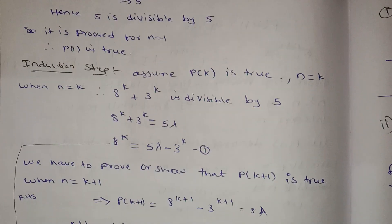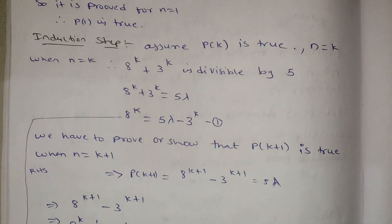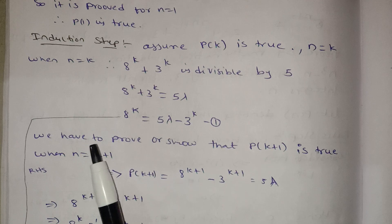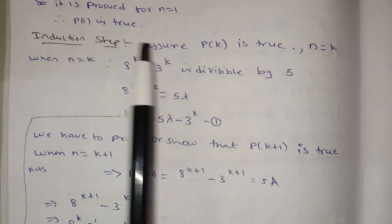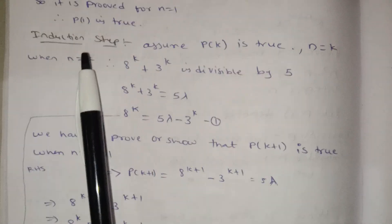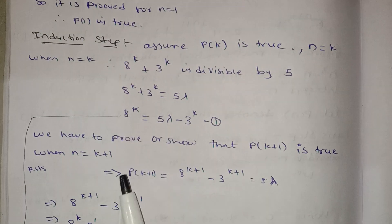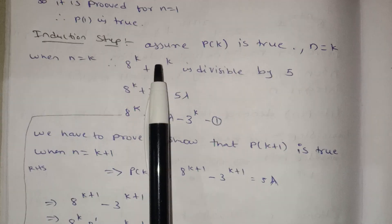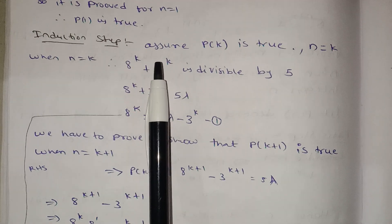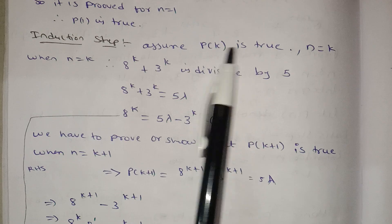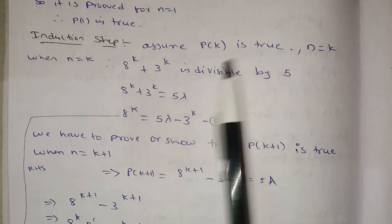The next step is the induction step. We have two types: induction step and induction hypothesis. Assume P of k is true for n equals k.